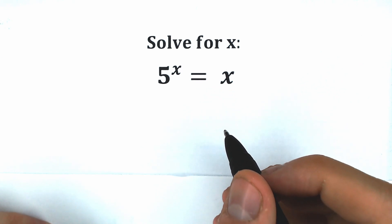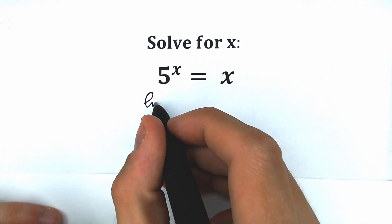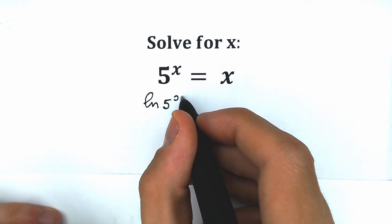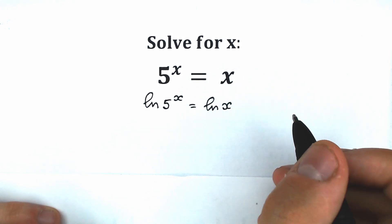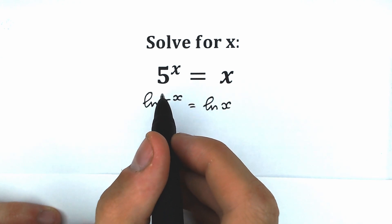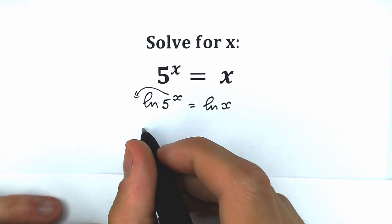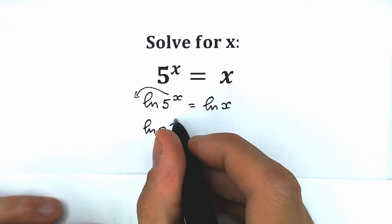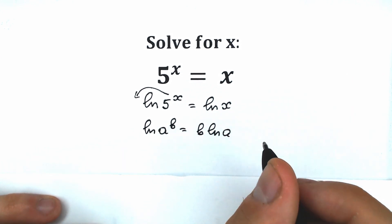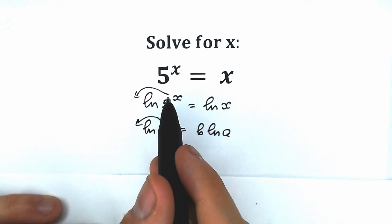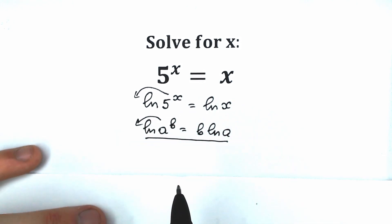How can we do this? First of all, let's take the natural log on both sides. So on the left side we have natural log of 5 to the x, and on the right side, natural log of x. We're going to bring this x down because of the log power property: natural log of a to the power b equals b times natural log a. This is a really important log property.